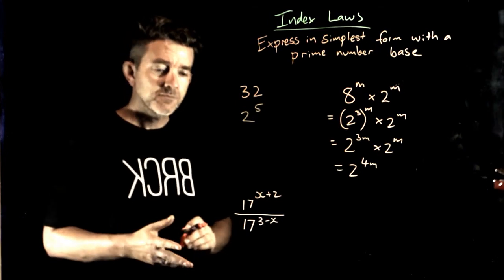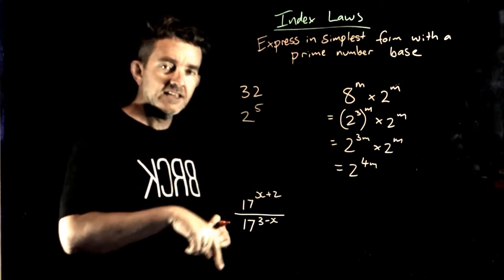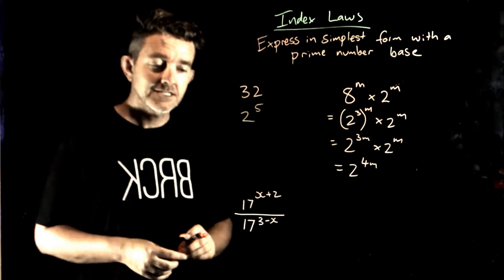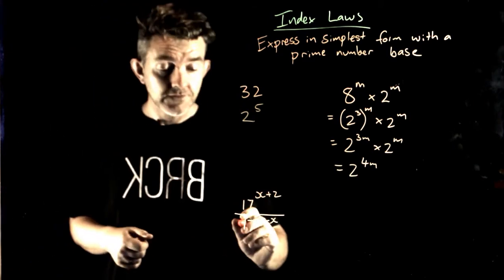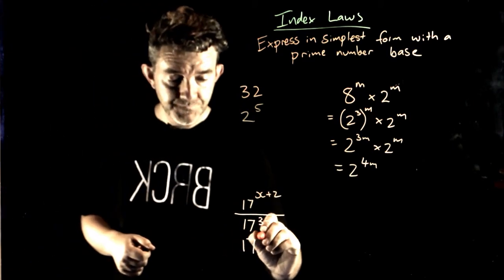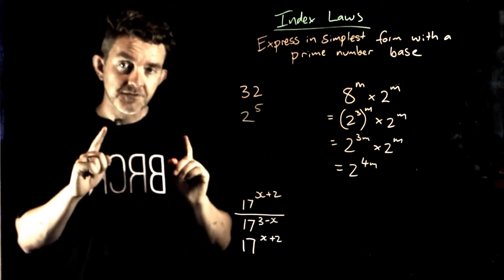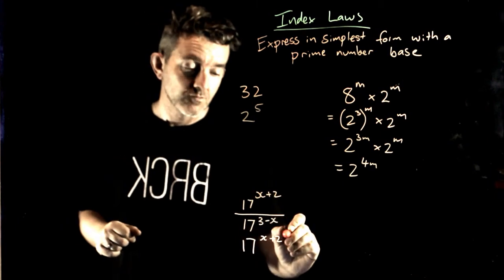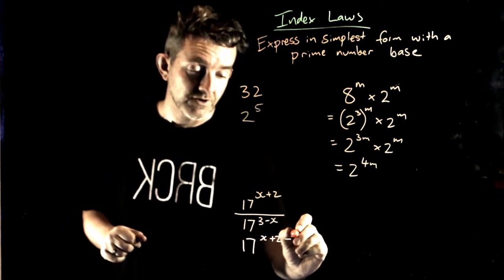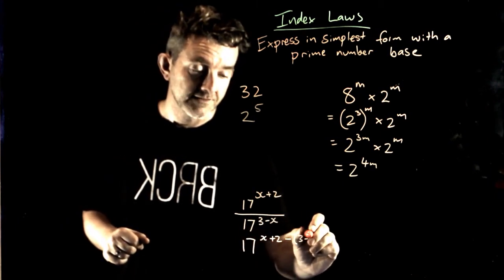So even though it looks a bit weird because we've got a big, sort of like a thingy, a little expression there for the index, we can still work with this. So this is going to be equal to 17 to the power of x plus 2, and I'm subtracting what's on the bottom. Subtract, I'm going to put in brackets, 3 minus x.